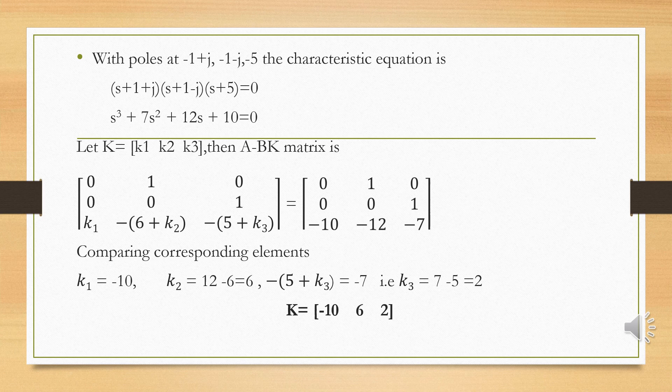Comparing polynomial coefficients in reverse order: minus 10 gives k1 equals minus 10; minus 6 plus k2 equals minus 12, so k2 equals 6; minus 5 plus k3 equals minus 7, so k3 equals 2. Therefore, the resultant gain matrix K equals [minus 10, 6, 2], placing the poles at minus 1 plus or minus j and minus 5.